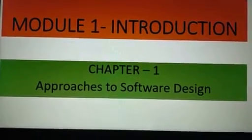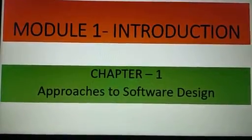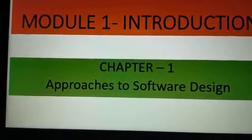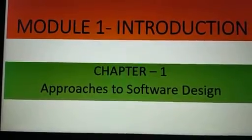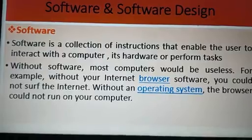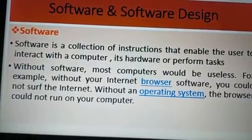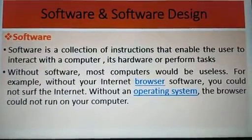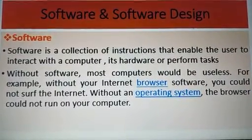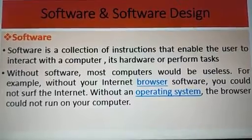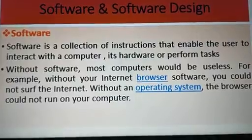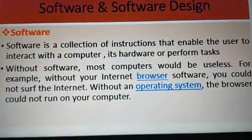Approaches to Software Design — what is software? It is called a group of instructions. It is called software. It performs a particular task. For example, an Operating System is software — Windows Operating System, Linux, Ubuntu are all Operating Systems.